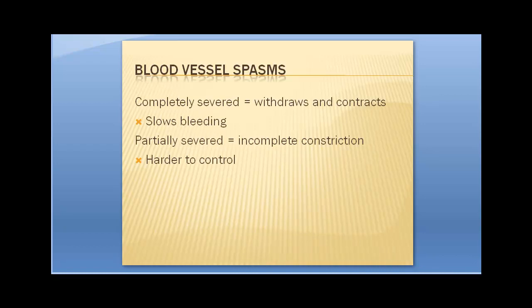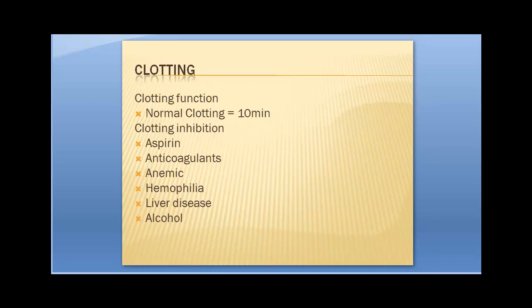If an artery or vessel is completely severed, it normally withdraws and contracts, which can actually help slow the bleeding. If it's not completely severed, that can make it harder to control because the ends don't constrict down — they're still attached and can't retract back into the tissue, which also helps slow bleeding. So it's the blood vessel spasming at the end when it's completely severed.